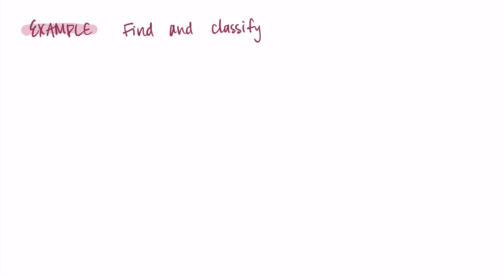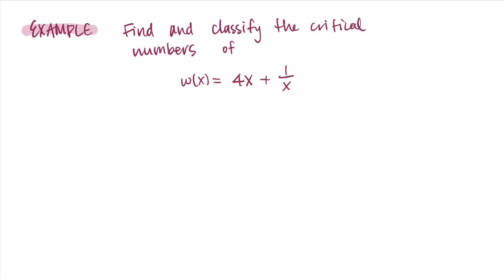In this video we're going to go through another example of using the first derivative test to find and classify critical points. I just want to highlight that I often switch between 'critical number' and 'critical point' — in my mind they're basically the same thing. A critical point usually means an x and the corresponding y value, but I often use it when referring to just the x value, so I'll use those interchangeably.